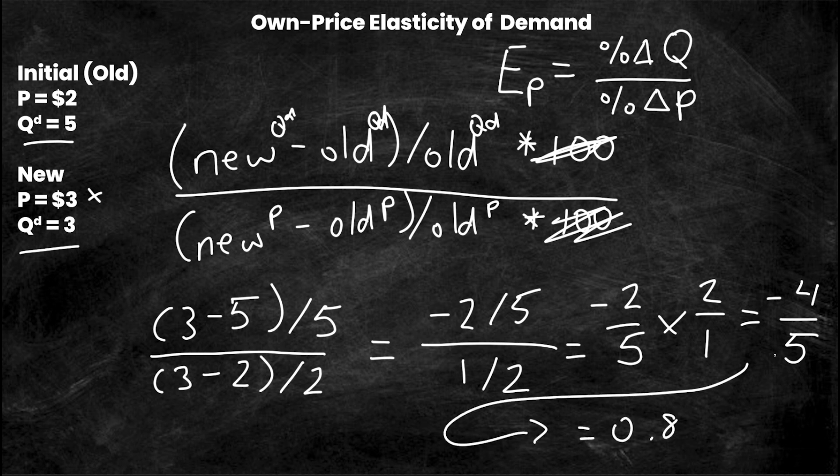Now you might be saying, where did the negative sign go? Well, we talked about this last week - the own-price elasticity of demand will always be negative because as P goes up QD goes down, and as QD goes up then P goes down. They are inversely related. So when we talk about own-price elasticity of demand, we are talking about it in absolute value.